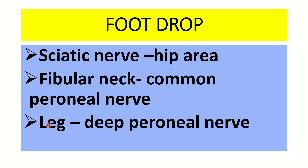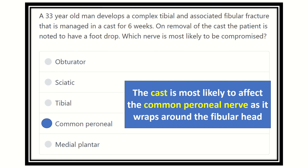If injury occurs in the leg area below the head and neck of the tibia and fibula, that will be compression of the deep peroneal nerve. So these three nerves in three areas are important for foot drop: sciatic nerve for the hip area, common peroneal nerve for the fibular neck area, and deep peroneal nerve for the leg area. In this patient, the injury occurs at the fibular area, so the answer is the common peroneal nerve — not any of the other options. Thank you all.